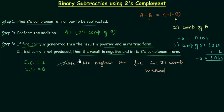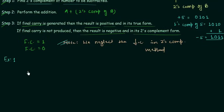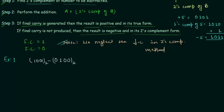Now we will move to one example. The above steps will be more clear when we solve this example. We have to perform the subtraction: subtract 0100 from 1001 in binary. So A is equal to 1001 and B is equal to 0100.